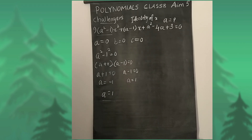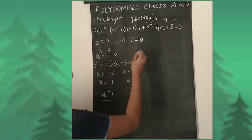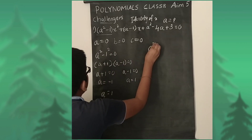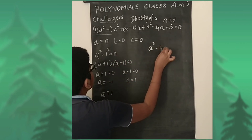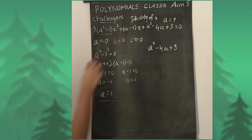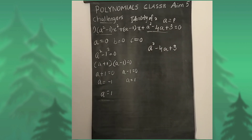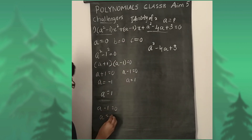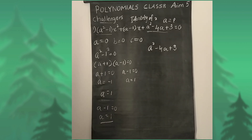Then we have to substitute. We have to find the value of a again — we have two conditions. We also have to test the middle term. That is, a² - 4a + 3. The middle term a - 1 = 0 also gives a = 1. So commonly from these two conditions we got a = 1.